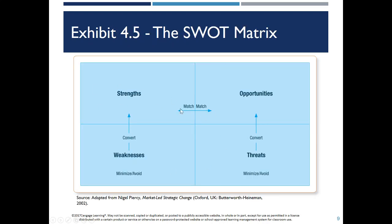Here's an example of the matrix. Once you get everything in the matrix, the things you try to do are: convert weaknesses into strengths, convert threats into opportunities, and match up your strengths with opportunities. So if there's some opportunity out there in the marketplace, how can you use a strength to capitalize upon it?